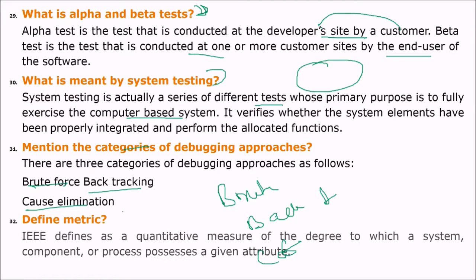Define metric. The IEEE definition of a metric is: a quantitative measure of the degree to which a system, component, or process possesses a given attribute.